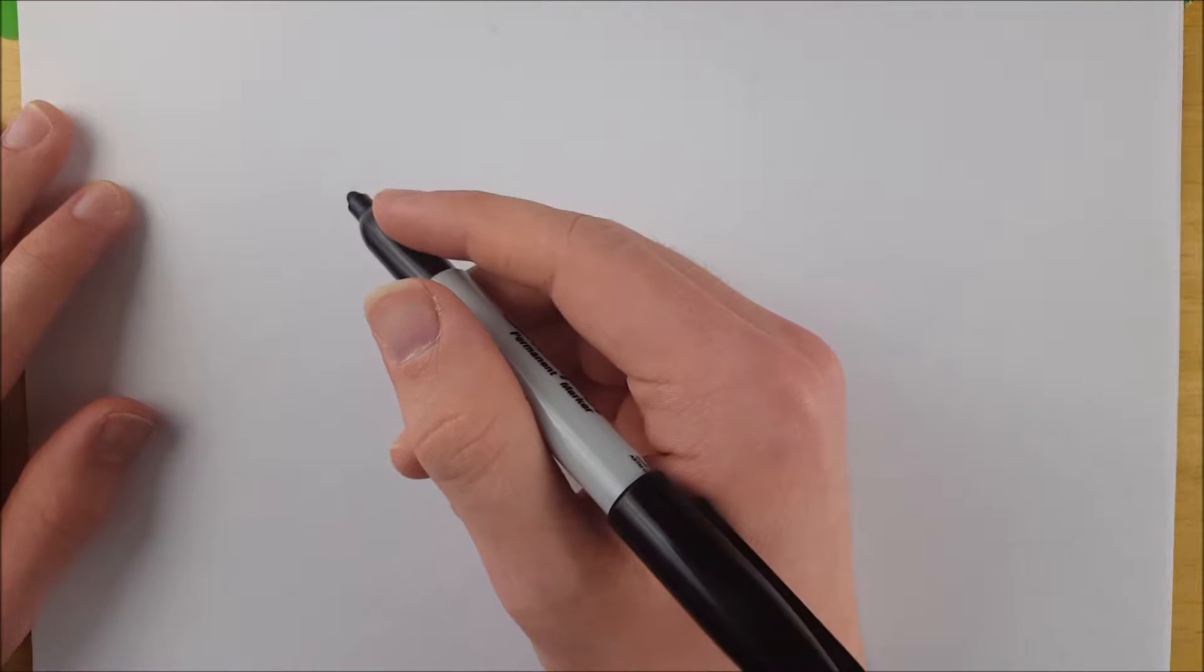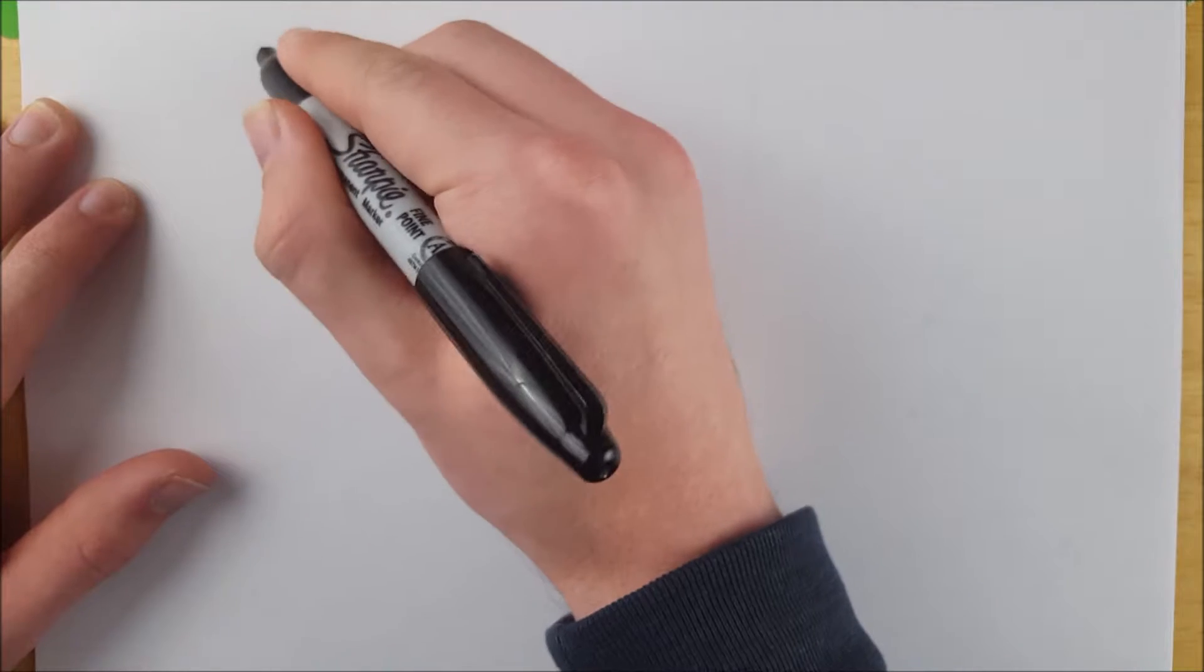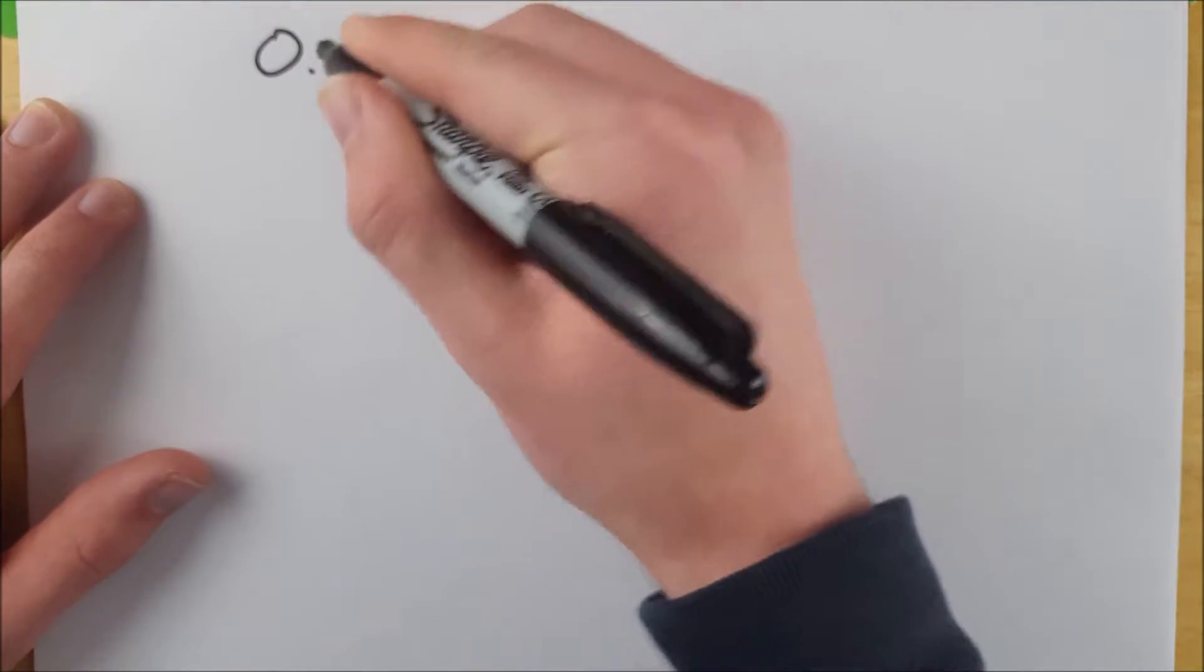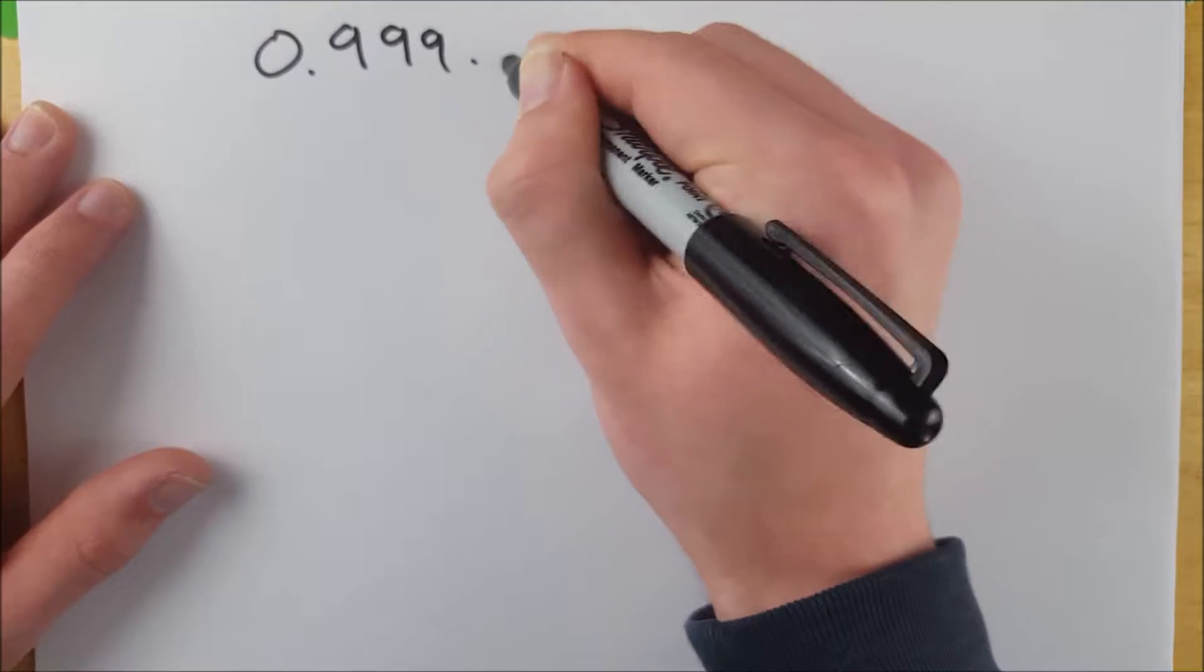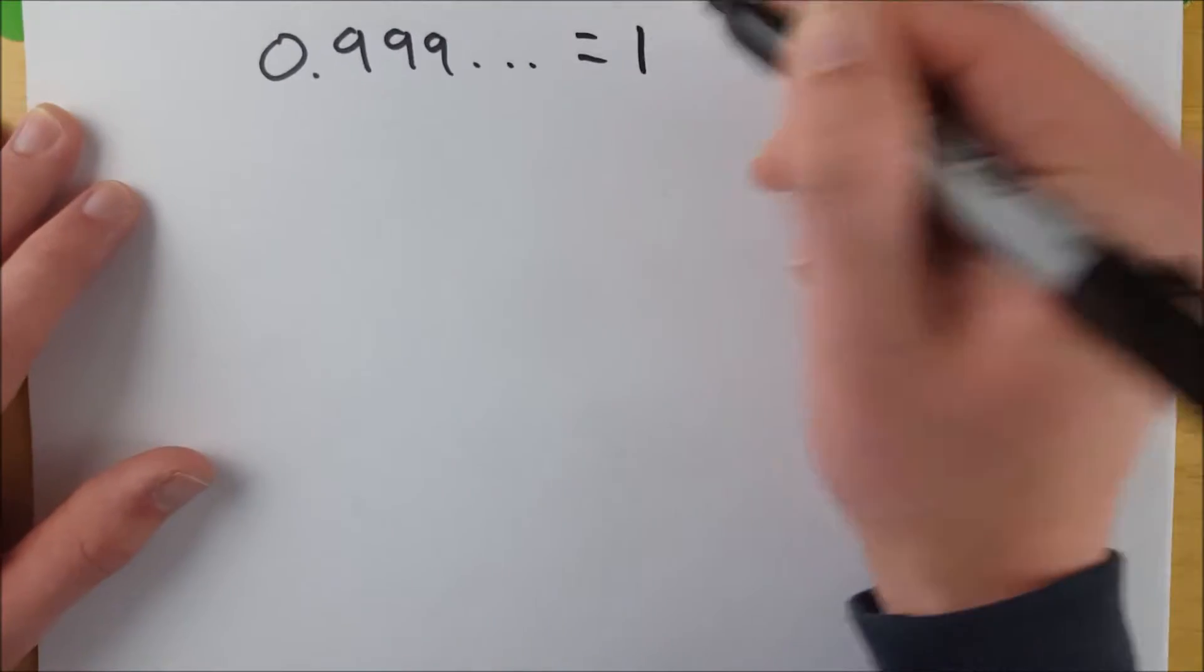Hey everyone, welcome to Wrath of Math. I'm your host, Sean E., and in today's video, we are proving the very cool result that 0.999 repeating on forever is indeed equal to 1.